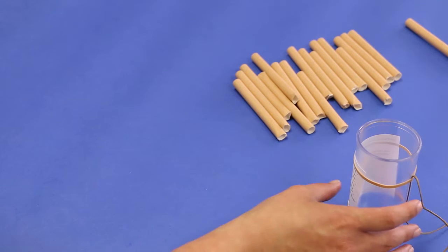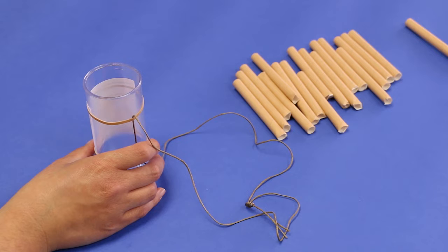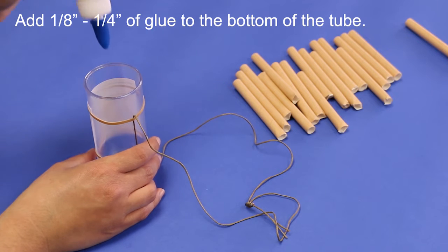With all of the straws cut, the next step is to fill the bottom of the tube with between one-eighth and one-quarter of an inch of glue.